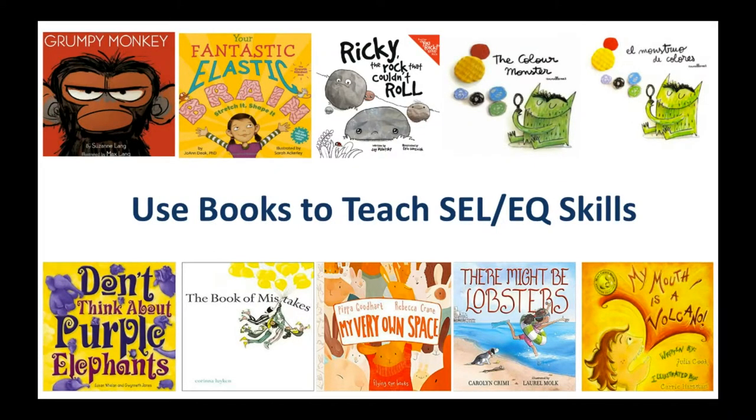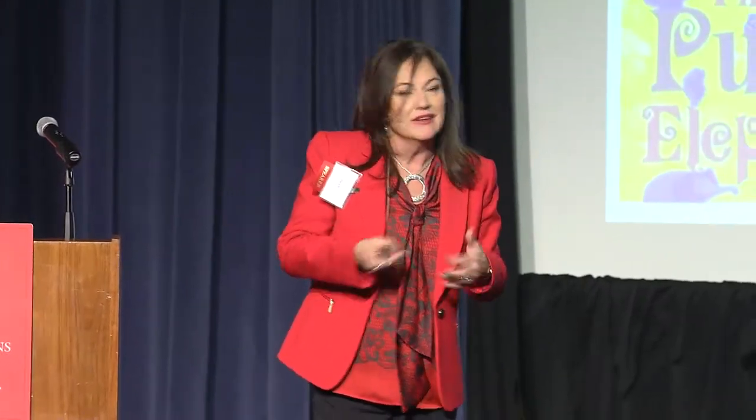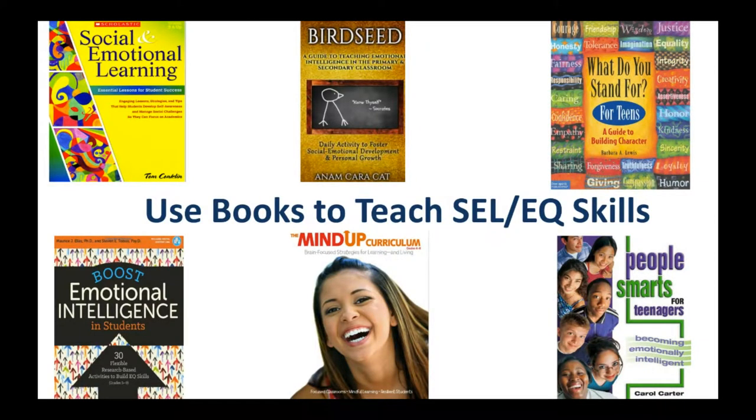Of course we can use books — these picture books are fabulous, and there's tons of them. They even come in Spanish. Now you're thinking you don't have time. It's not an either-or — you don't teach or teach social-emotional learning; students need both, and they need it embedded. Older students can use books like Birdseed — not to be confused with Bird Box — which has 30 exercises that take less than 30 minutes. You can even have students write outside of class. There are several you could use.